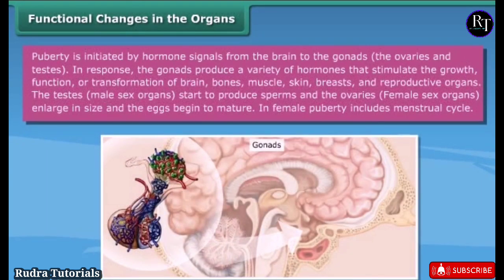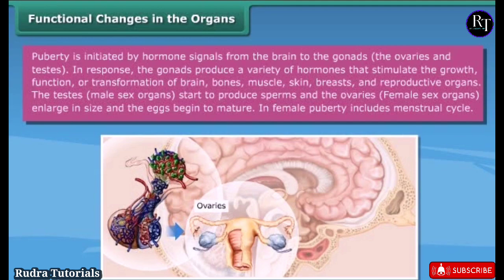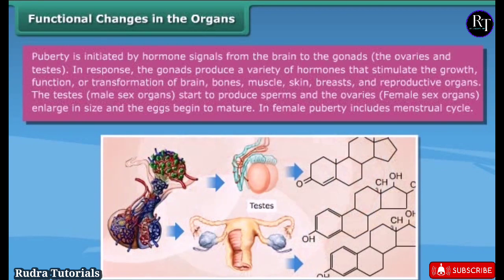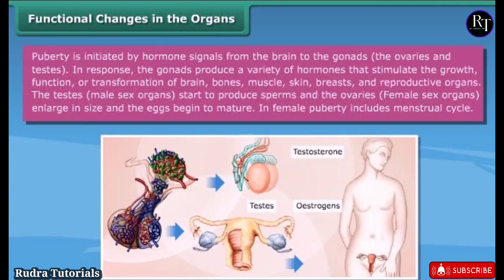Functional changes in the organs: puberty is initiated by hormone signals from the brain to the gonads — the ovaries and testes. In response, the gonads produce a variety of hormones that stimulate the growth, function, or transformation of the brain, bones, muscle, skin, breasts, and reproductive organs. The testes start to produce sperm, while the ovaries enlarge in size and eggs begin to mature.